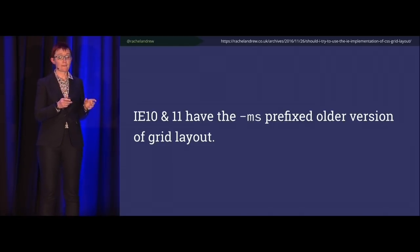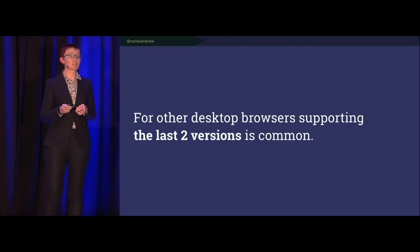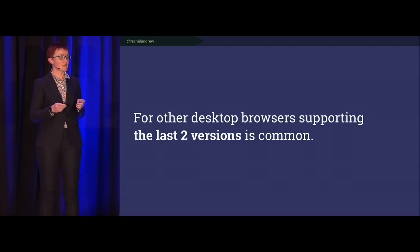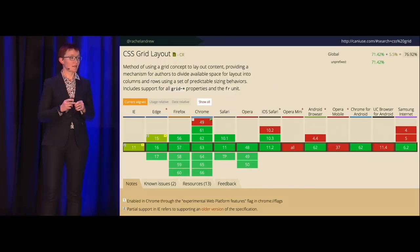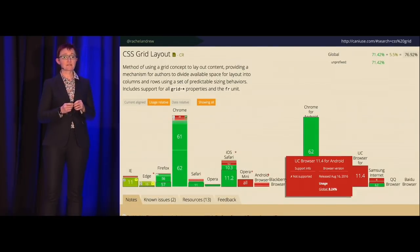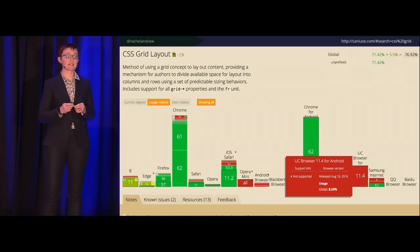For other desktop browsers, supporting the last two versions was very common. We have feature queries to code around lack of support. But there are browsers that might never get grid layout — and let me add a few more to the Can I Use chart. The key browser to look at here is UC Browser. About 8% of people are using it. In September 2017, StatCounter reported UC Browser had 35% of traffic in India, coming second only to Chrome.